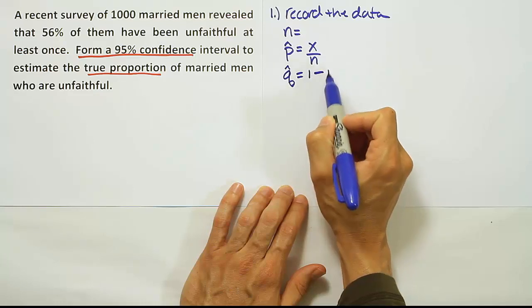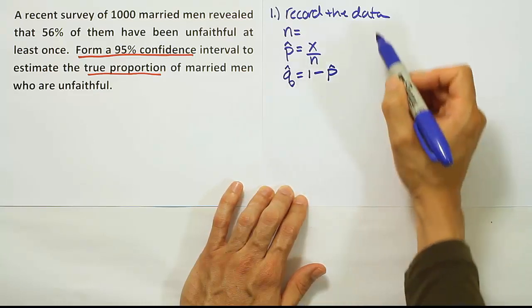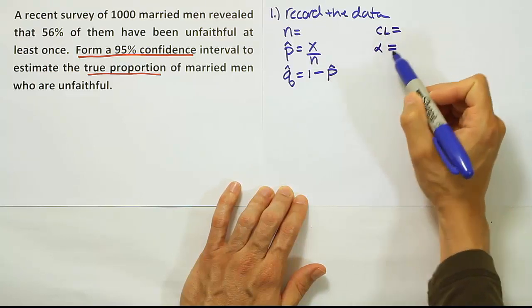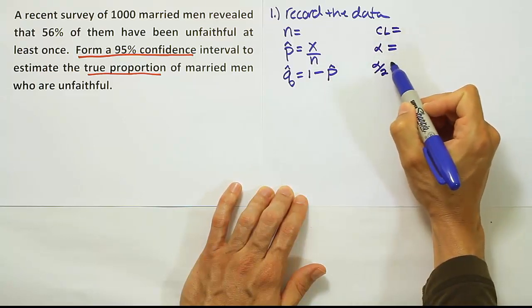From there, we can get Q-hat, which is just 1 minus P-hat. And then we need the confidence level, alpha, and from there we can get alpha divided by 2.